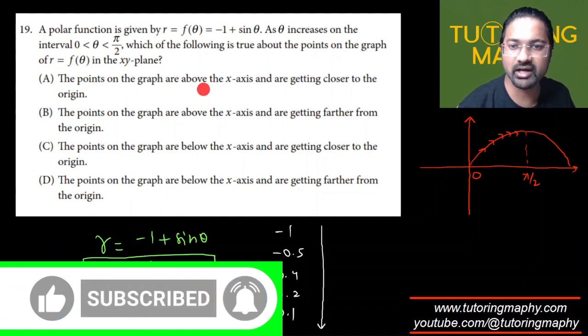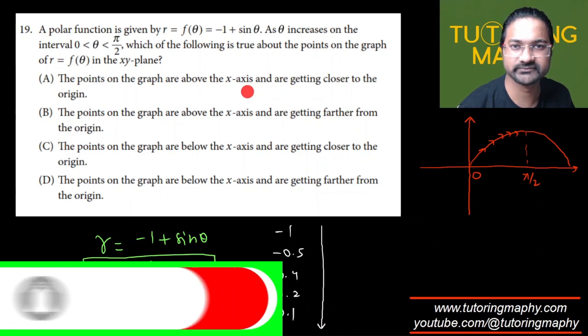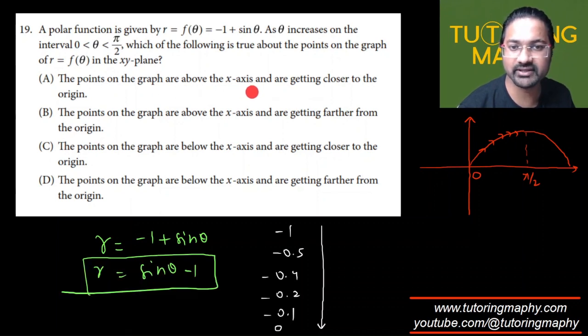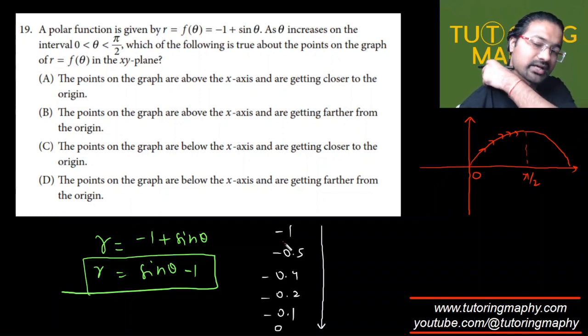The points on the graph are above the x-axis? No way. Because if they are above the x-axis and getting closer to the origin, that won't really work. These are not above the x-axis. Here the value of r is negative. It has to be below the x-axis. So above and above are just ruled out.